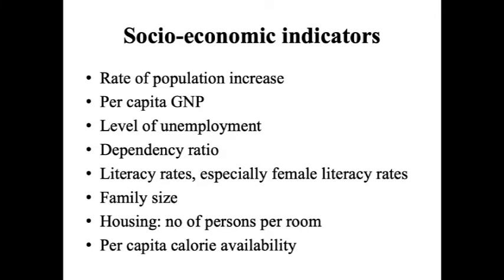Socioeconomic indicators include the rate at which population is increasing, per capita GNP (Gross National Product), level of unemployment, dependency ratio, literacy rates (especially female literacy rates), family size, housing, number of persons per room, and per capita calorie availability.